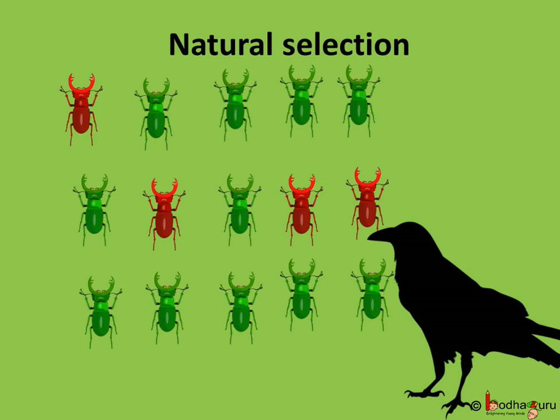We can say it is directed evolution, where the most beneficial genes or traits — like the green colour of the beetle — are more likely to succeed and eventually become predominant. Thus, natural selection is an adaptive process.